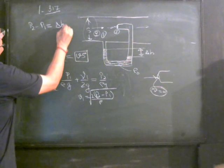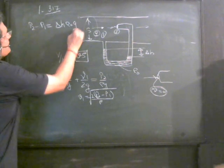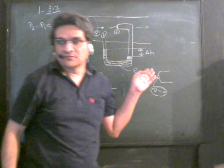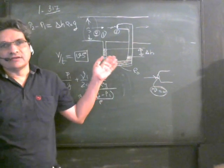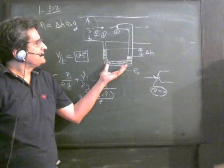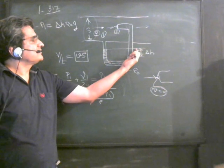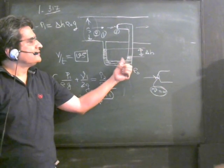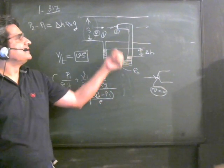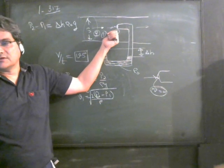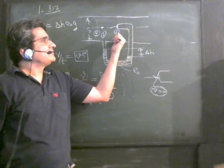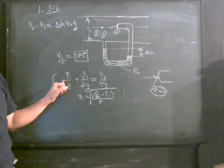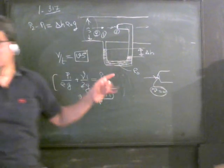So p₂ - p₁ = Δh·ρ₀·g. Here take ρ₀. Please be careful: when you have such an experiment and find the difference in pressure, take the density of this liquid, not the density of the gas. Similarly, while applying Bernoulli's equation, take the density of the gas, not the density of the liquid.